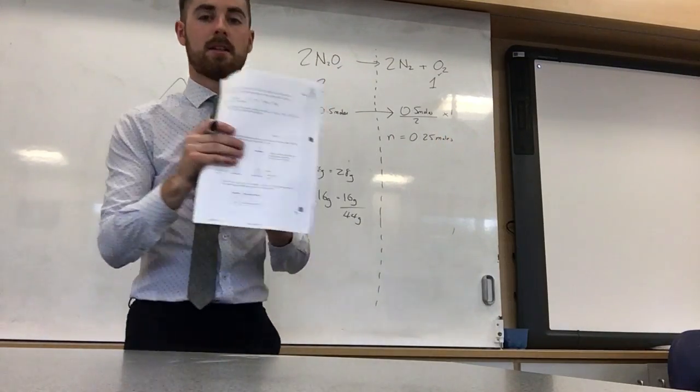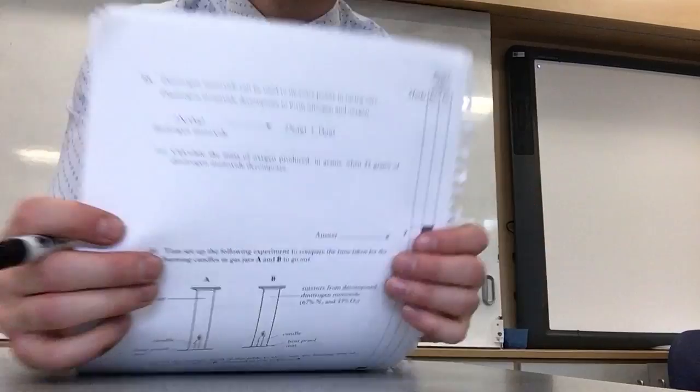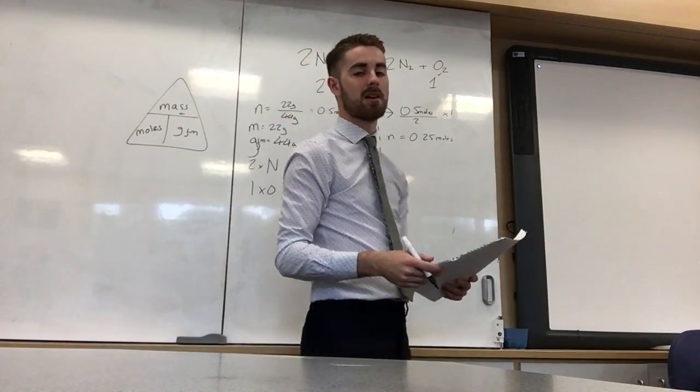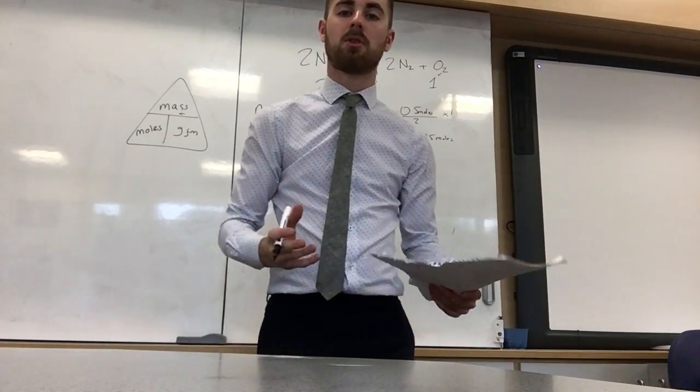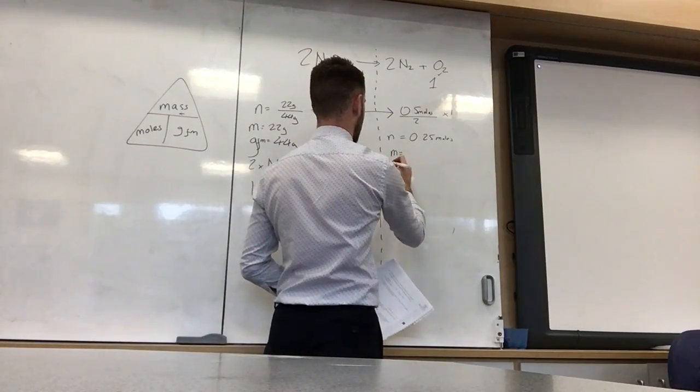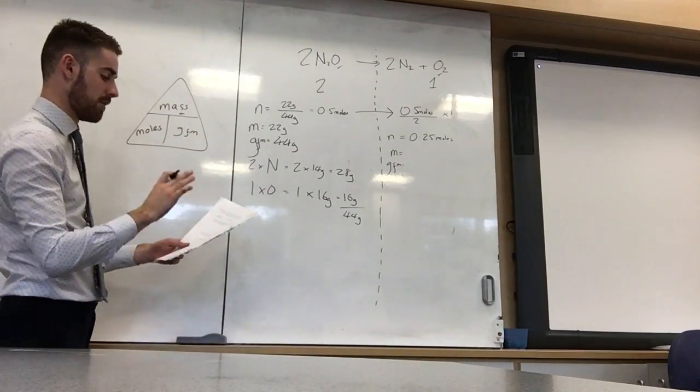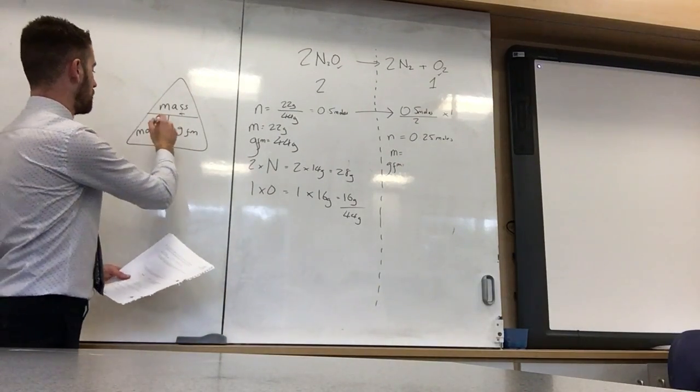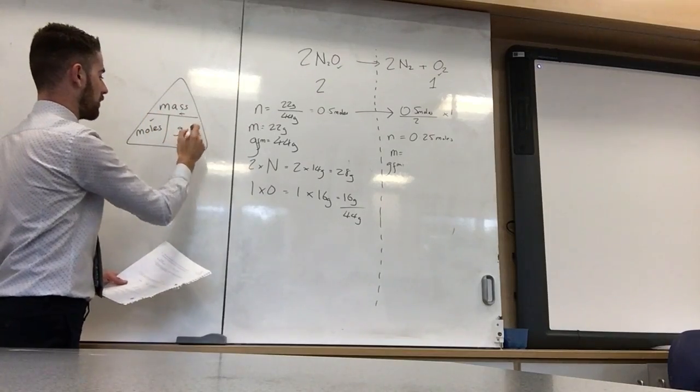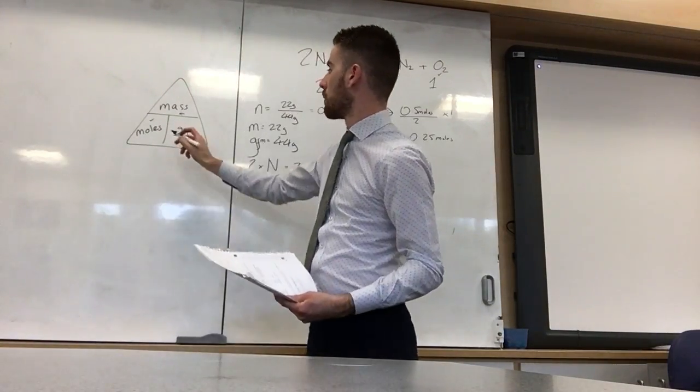What the question is asking is calculating the mass of oxygen produced. So we know now 0.25 moles is produced, but what does that equate to in grams? Well, to find that out, we need to refer back to our triangle. So to find out the mass now, we need to have moles and we need to have gram formula mass. We've got them both. What do we do? Well, we multiply them together.